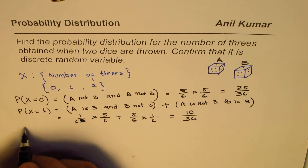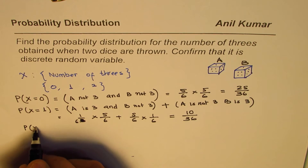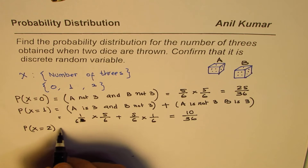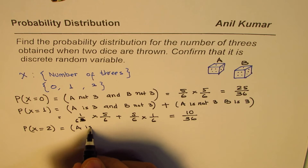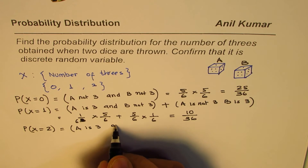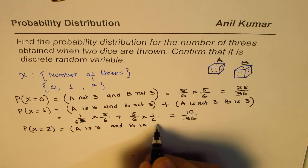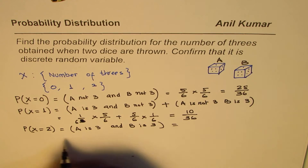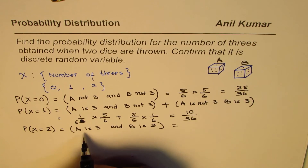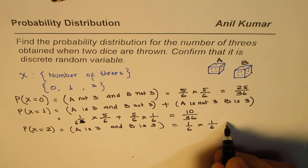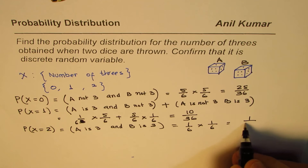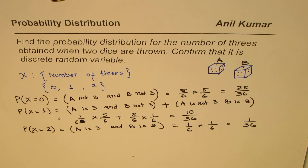The last case is when X equals 2, meaning both dice show three. That is, A is three and B is three. So the probability is 1/6 × 1/6 = 1/36. That is the probability that both dice show three.